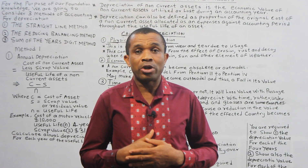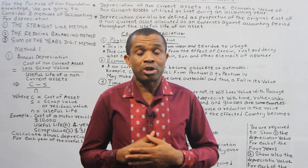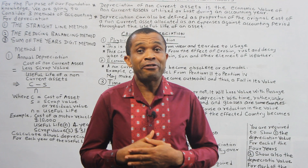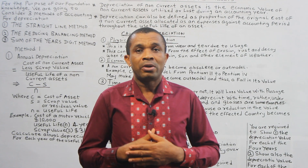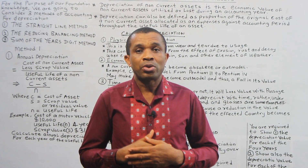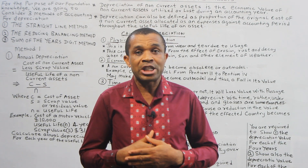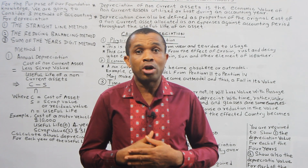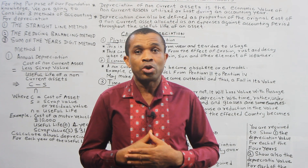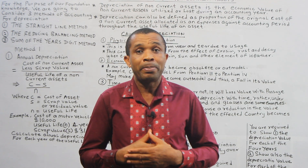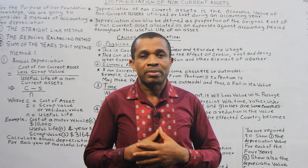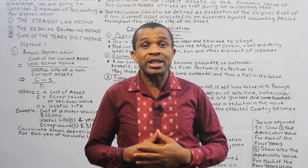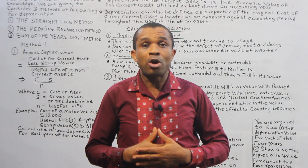We are going to look at various methods of accounting for depreciation of non-current assets. For the purpose of our foundation level, we will look at three basic methods: 1. The straight line method, which can also be called the fixed installment method or the uniform rate method. 2. The reducing balance method, also called the diminishing balance method. 3. The sum of the year digits method. Let us look at the first method — the straight line method of accounting for depreciation of non-current assets.